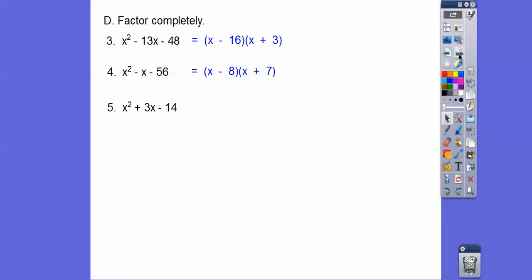How about this one? So factors of negative 14. Well, 14 is 1 and 14, 2 and 7, and that's it. So this guy doesn't factor. This one's prime.